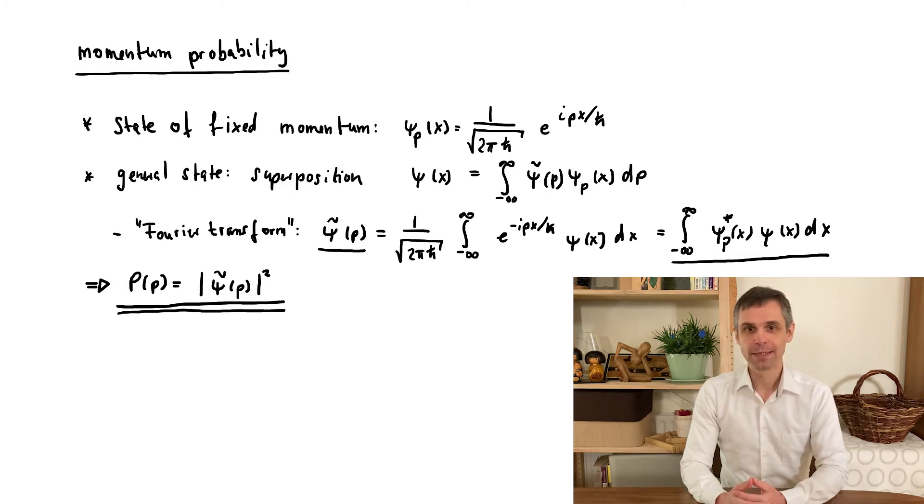What we do here is just to look at their relative intensities to determine how likely it is to find the particle with the corresponding momentum.